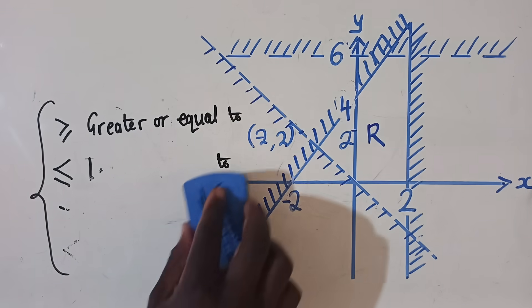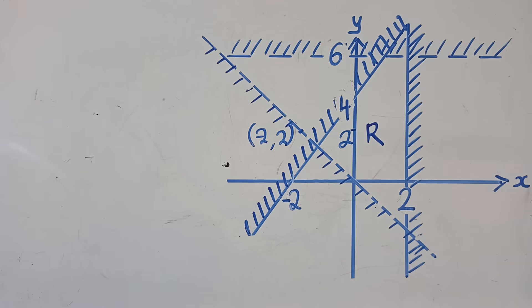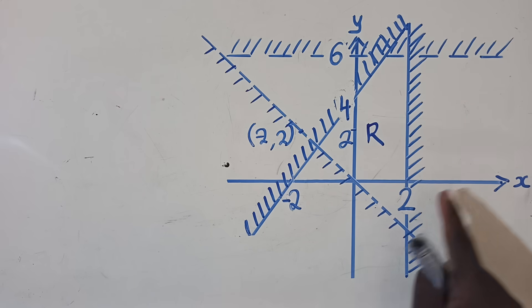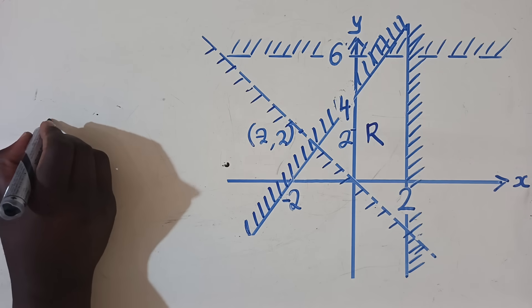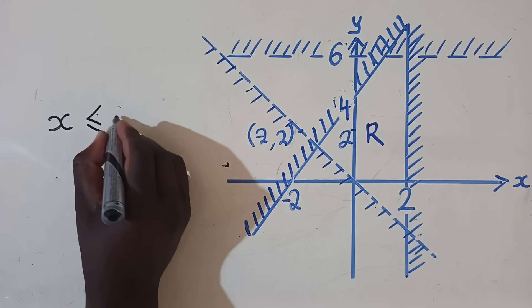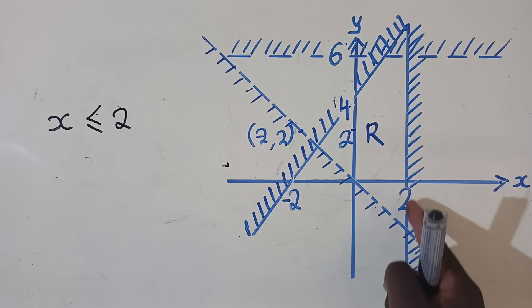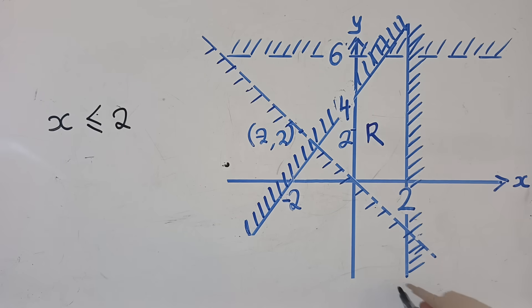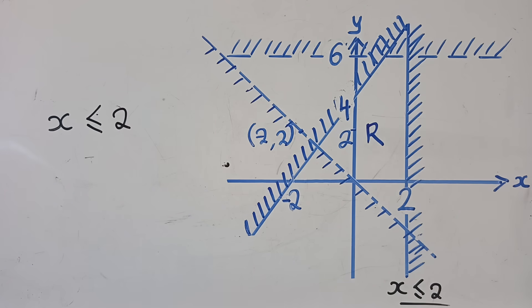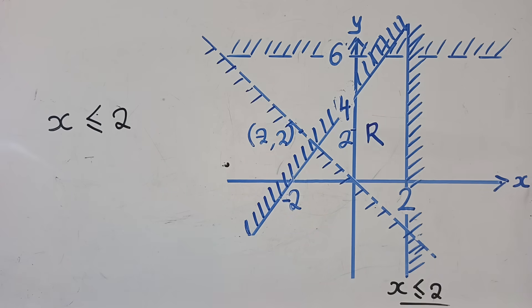Now let's try to apply these to answer our question. When answering questions like this, start with simple inequalities. This line is only cutting the x-axis at 2, so we're going to say x is less than or equal to 2. How did I know it's less? We always look at the side which is not shaded — the unshaded region shows the less side.